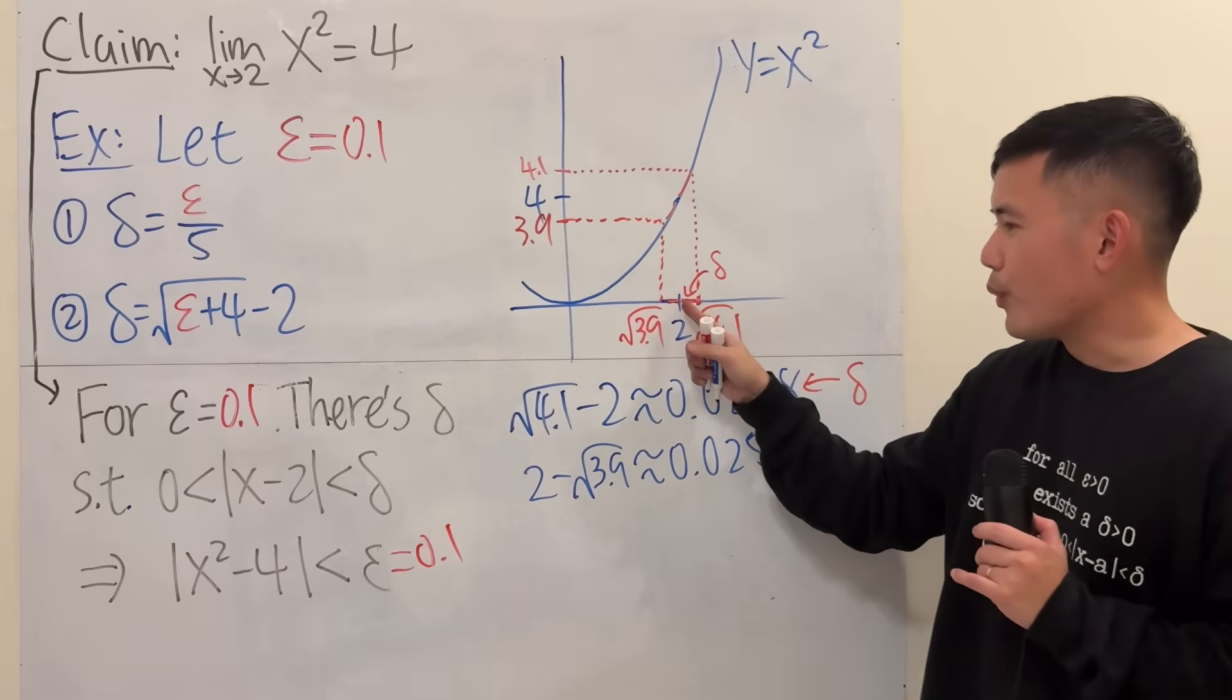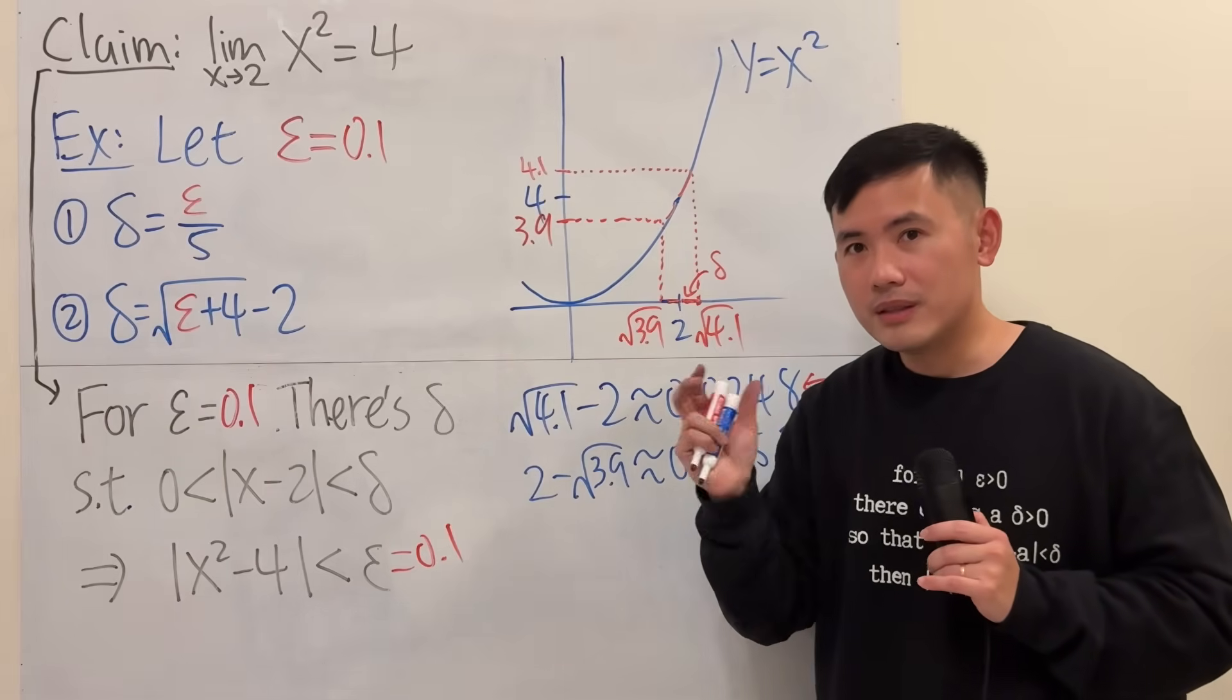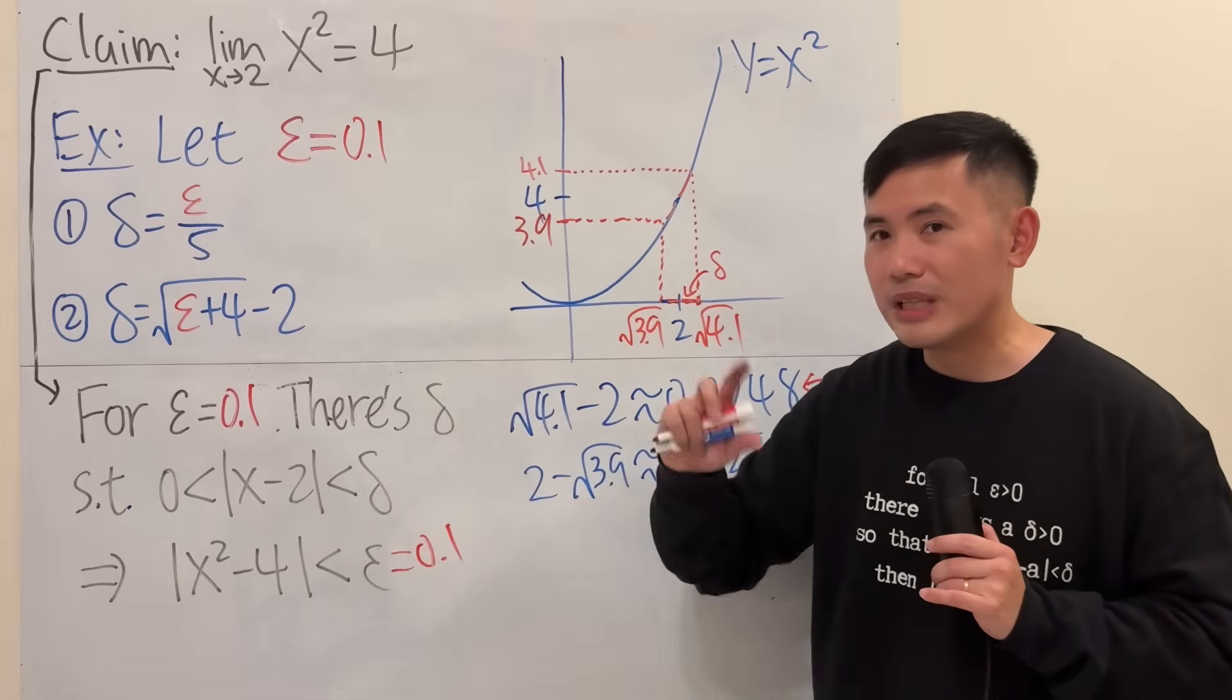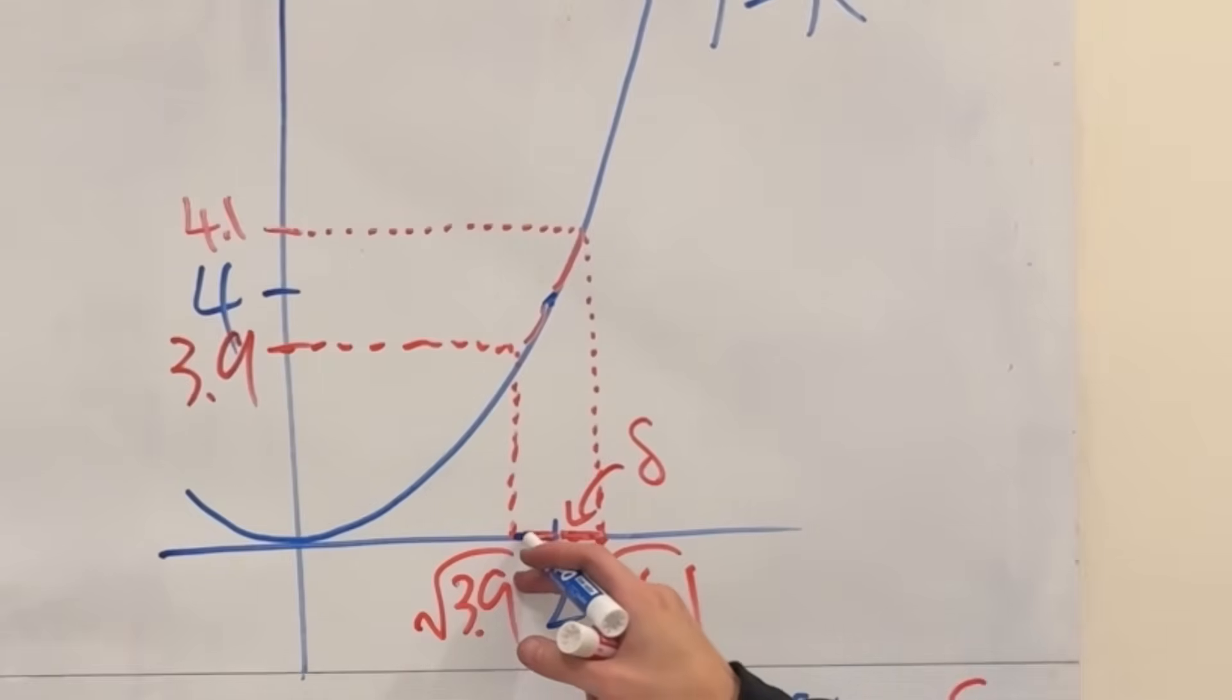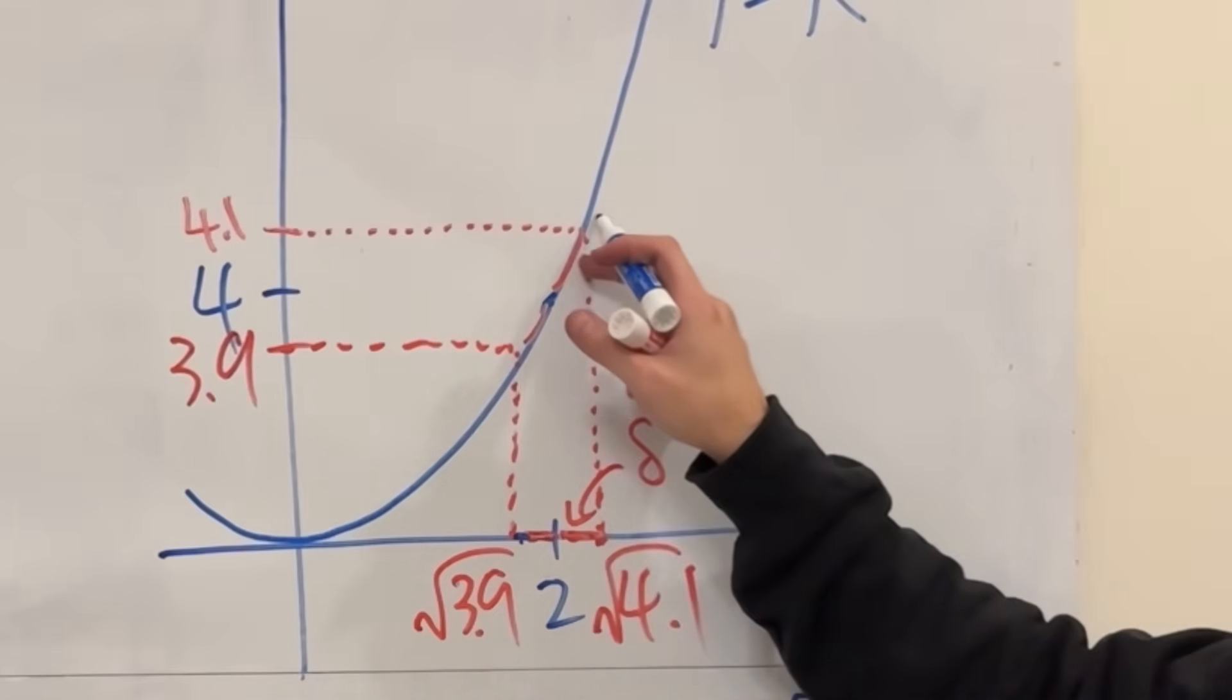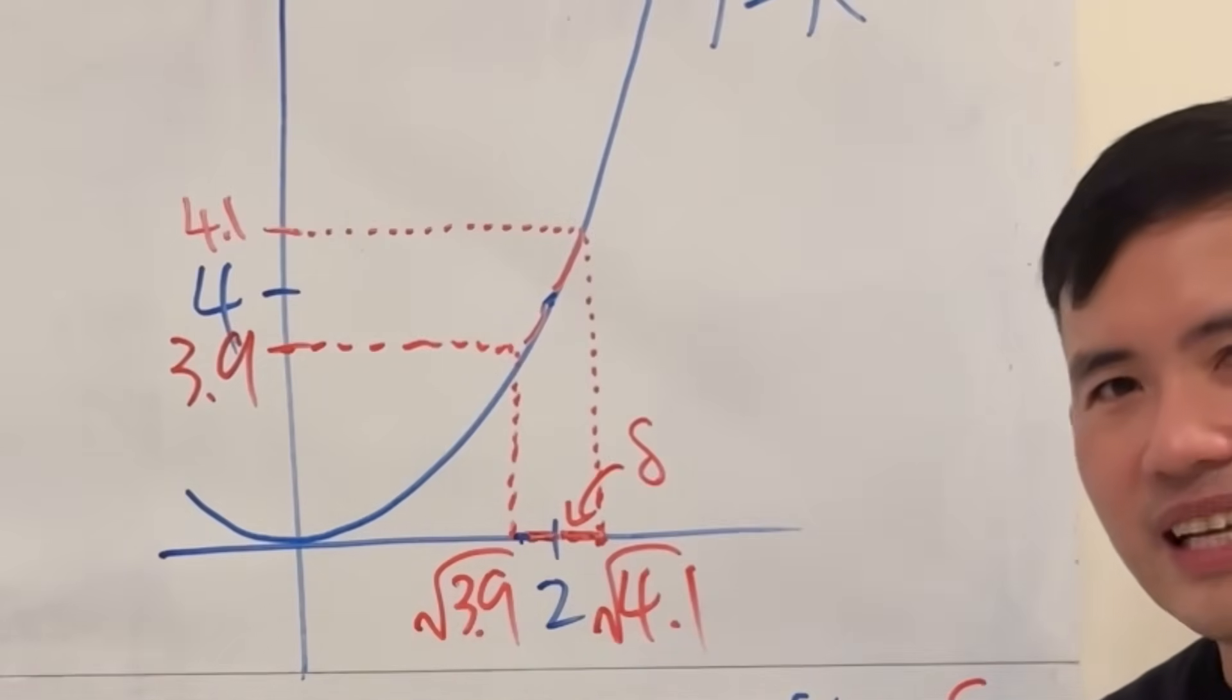But you might be wondering, why though? Why the smaller one? Remember, this thing, delta is going to help you left and right, right? You have to do left and right. So if you happen to pick the x right here in this little tiny bit, when you move to the right, oh-oh, you went out of the region. If you go up, this y value is going to be more than 0.1 away from the 4, and that's not what we want.